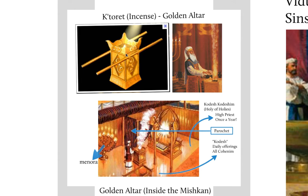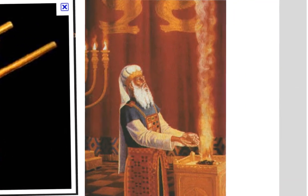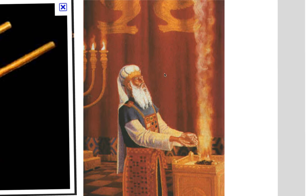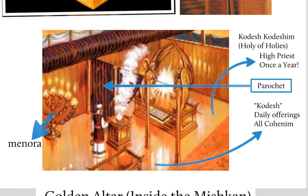Here's what the golden altar looked like — about the size of a person, with two poles for carrying. Here's a picture of the high priest offering some incense with smoke going up. The incense altar is by the curtain called the parochet, separating the Kodesh from the Kodesh Kodeshim — incidentally, the curtain in front of the Torah in a synagogue's Ark is also called a parochet. Only one day a year did the priest go inside the Kodesh Kodeshim, and they would light incense first to fill the area with smoke — almost like a protection against God's incredible power — and the priest would go inside just on Yom Kippur.